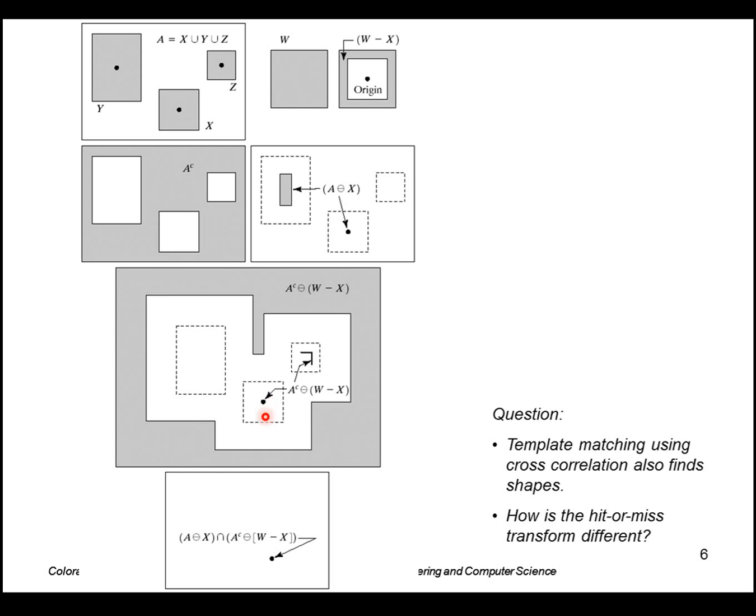We take the intersection of these two, this image here and this image here, and that just gives us the single point here. Similar to cross correlation, this transformation finds the location of shapes and images.